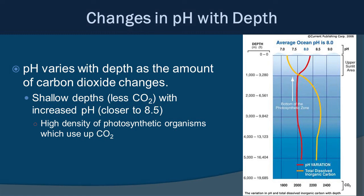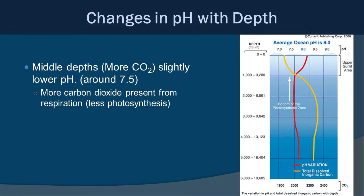pH varies with depth as the amount of carbon dioxide changes. In shallow water, there is less carbon dioxide and an increased pH closer to 8.5, because a high density of photosynthetic organisms uses up CO2, even with access to atmospheric diffusion. At middle depths, there is more carbon dioxide and thus a slightly lower pH around 7.5, because more respiration occurs with less photosynthesis.